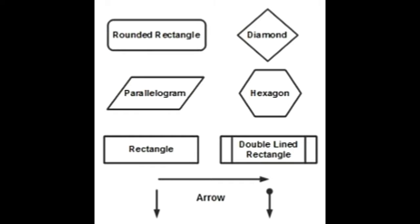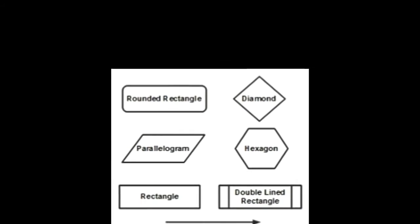To branch out the different stages, arrows are used. There are basically three types of arrows used, which can be seen in the figure. The rounded rectangle represents the start or end of a program or process. Many times, circles or ovals are also used to represent the start and end of a process.